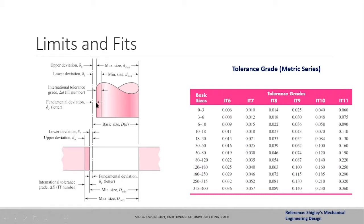There are two lines representing the difference from the basic dimension. The projection of the shaft component closest to the basic dimension is called the fundamental deviation from the basic size. On top of that, you add a tolerance zone based on how much tolerance you are specifying, which is given by the IT number - the international tolerance grade.